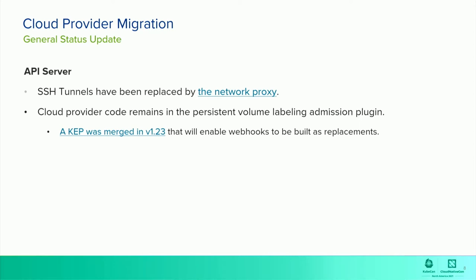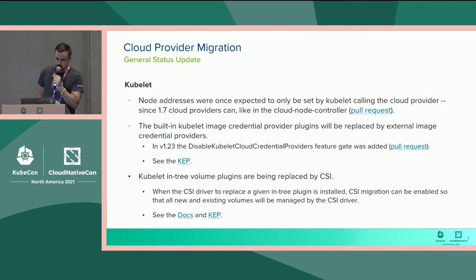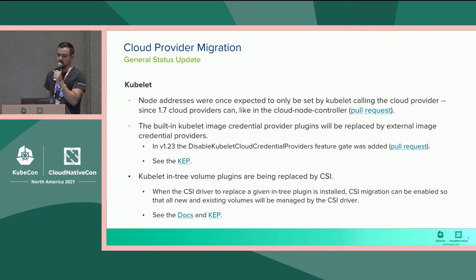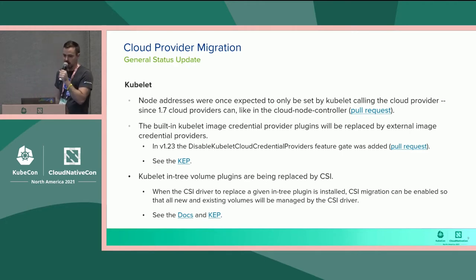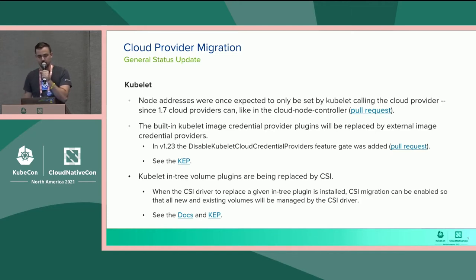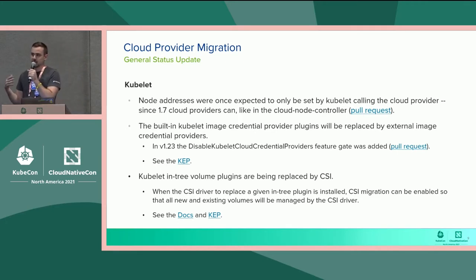That's related to labeling manually created persistent volumes with topology labels. Another important component is Kubelet. Kubelet has a number of areas of cloud provider-related code, the first being node addresses. For quite a while now, node addresses can also be set by some other process — which in most cases is the cloud node controller. So a Kubelet can initialize a node without setting the addresses, and the cloud node controller can asynchronously populate those addresses.